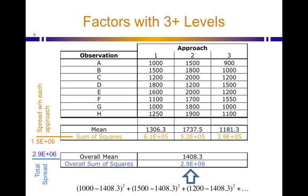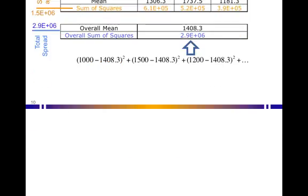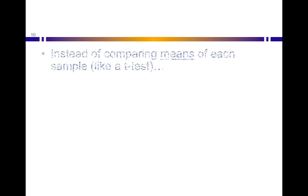So we have these two values of spread: the sum of squares within and the sum of squares total. What do we do with all that in analysis of variance? Well, instead of comparing means for each sample like in a t-test—remember our t-test sort of intuitive equation was a mean value or a difference in means in the numerator—